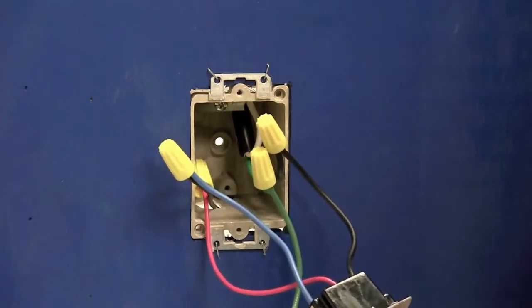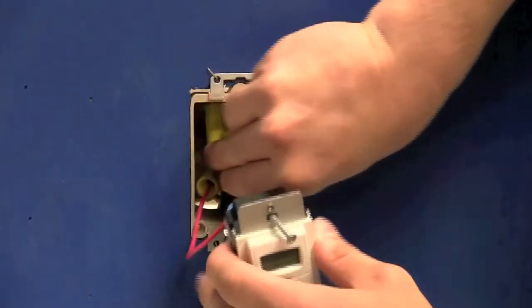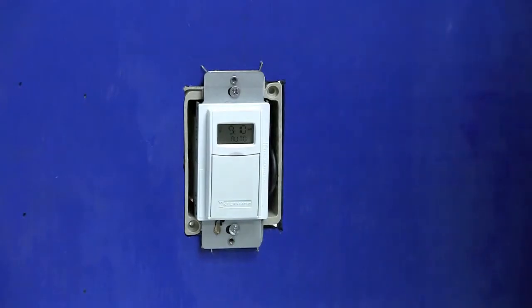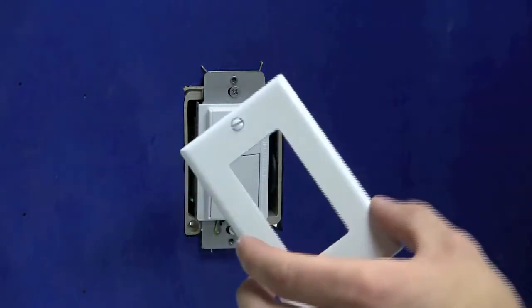All the connections are complete on the timer, so we will insert it back into the wall. Now that the timer is secured to the wall box, we will put the decorator style cover plate on.